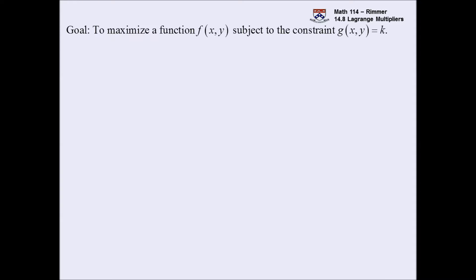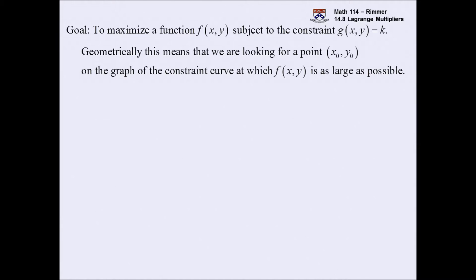Let's get started. Section 14.8 is constrained optimization — where we have a function f that we want to maximize or minimize, and there is a constraint. We call that constraint some function g. We're looking for the point on the graph that also satisfies the constraint curve, giving the biggest z value possible.